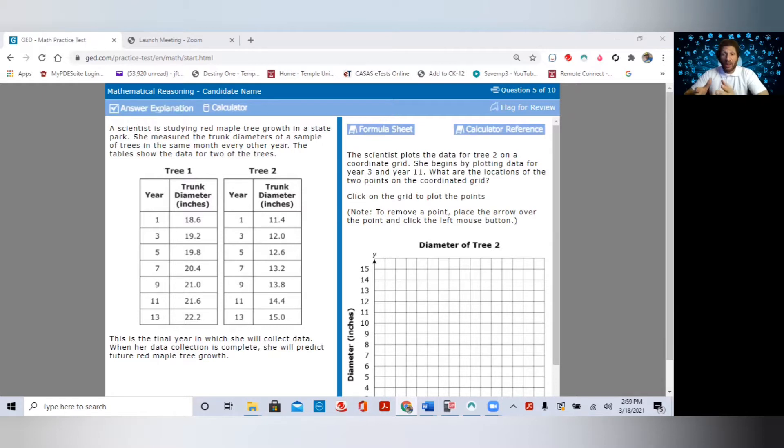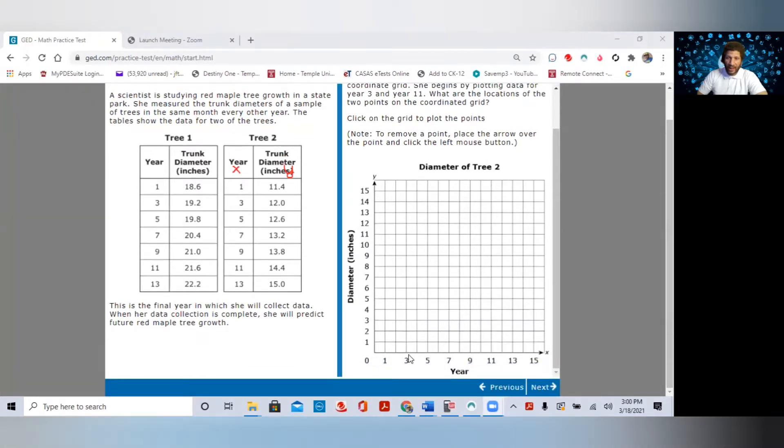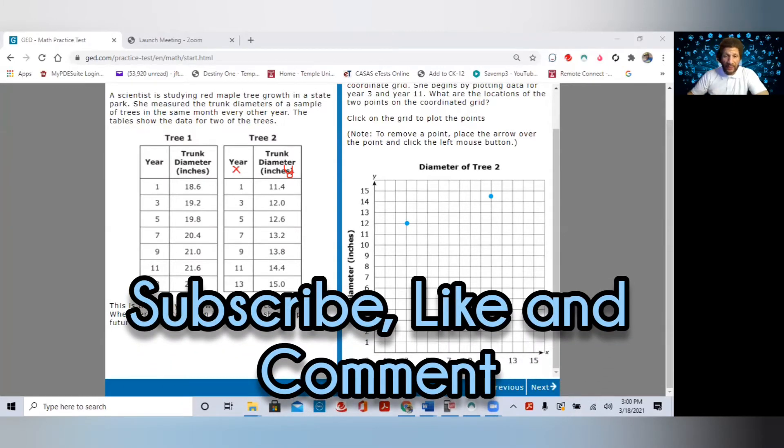First of all, the scientist plots the data for tree two. That's important. Tree two. They gave you information about two trees. They only want you to plot data for tree two on a coordinate grid. She begins by plotting data for year three. You can almost think this is the independent variable, and this is the dependent variable. So X and Y. So if we want to chart year three, we would do three and 12. We go on our chart. Our X is three. Our Y is 12 right there. And we want to do the same thing for year 11. The year is 11. Your X is 11. Your trunk diameter is 14.4. Your Y is 14.4. So we go to year 11. We come straight up to 14.4, which is right in the middle between 14 and 15. And that's how you will plot those two points. You definitely will have to plot points on your GED math exam. So you have to be sure you know how to plot points on a coordinate plane. That's the first part of this question.